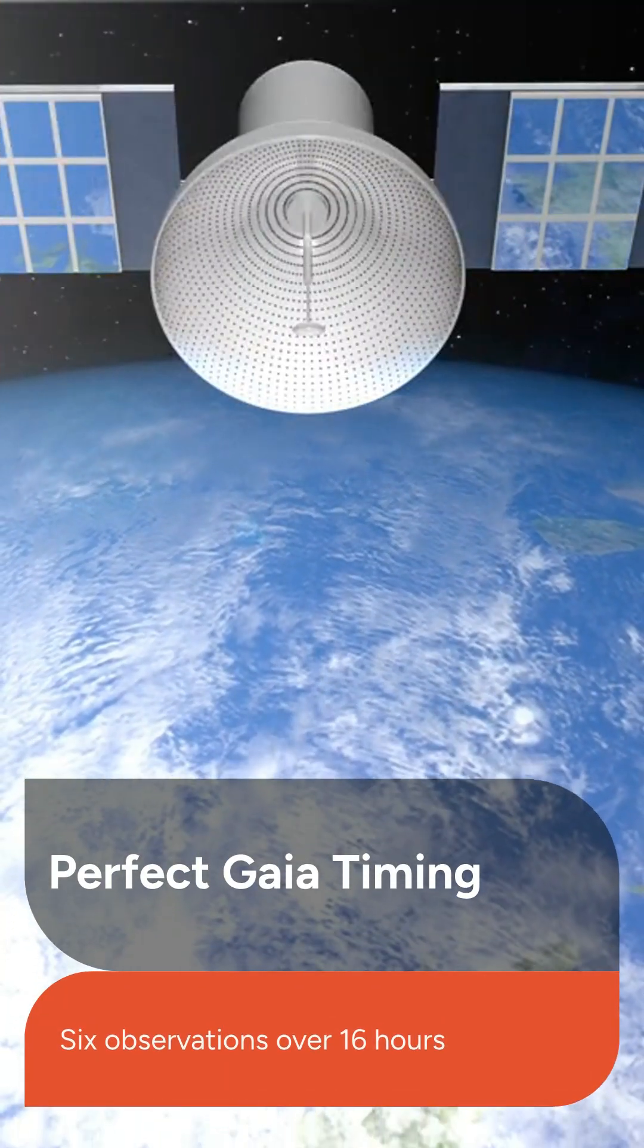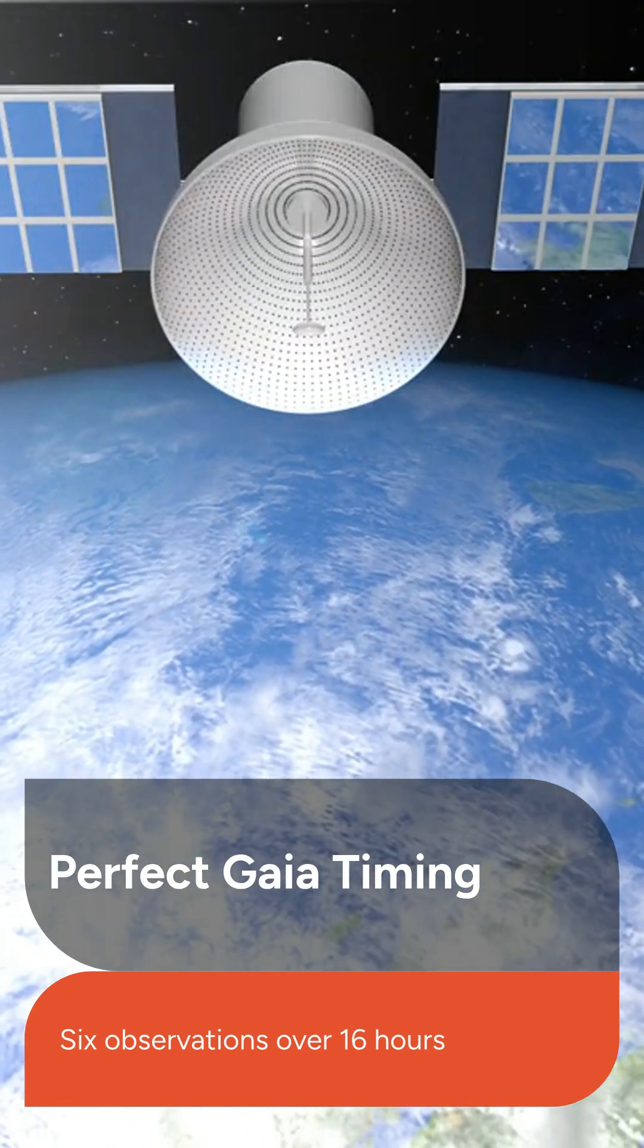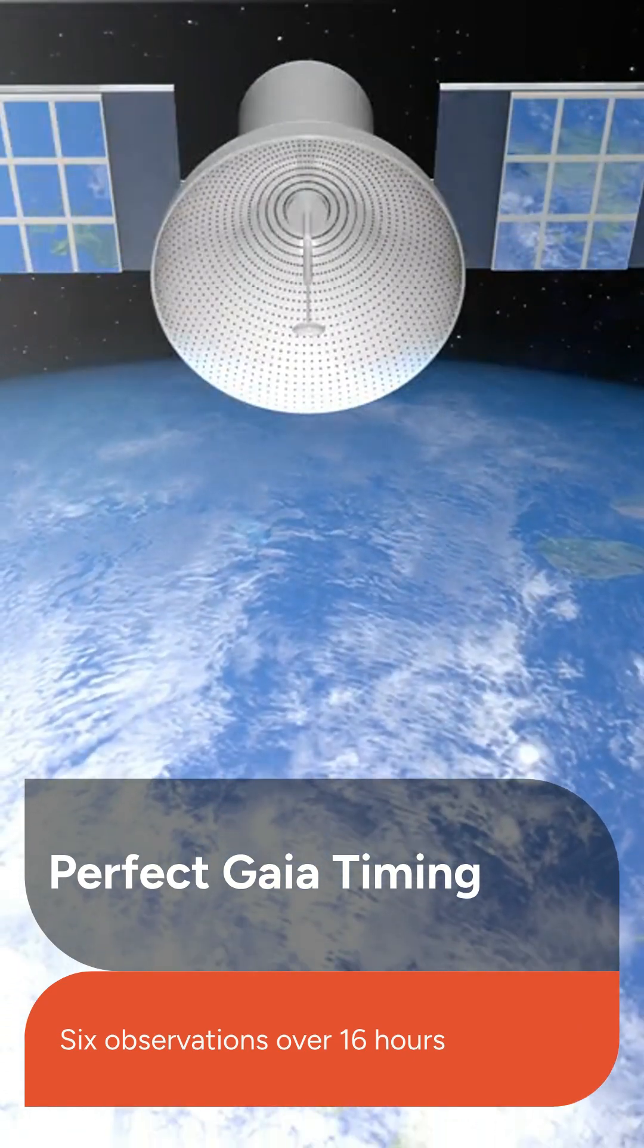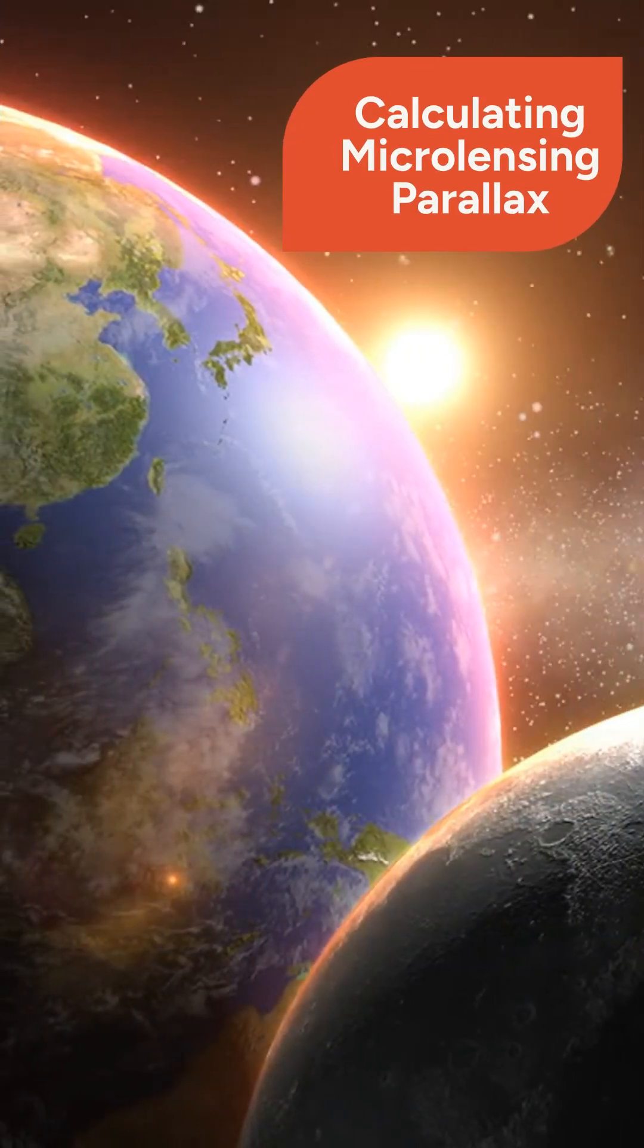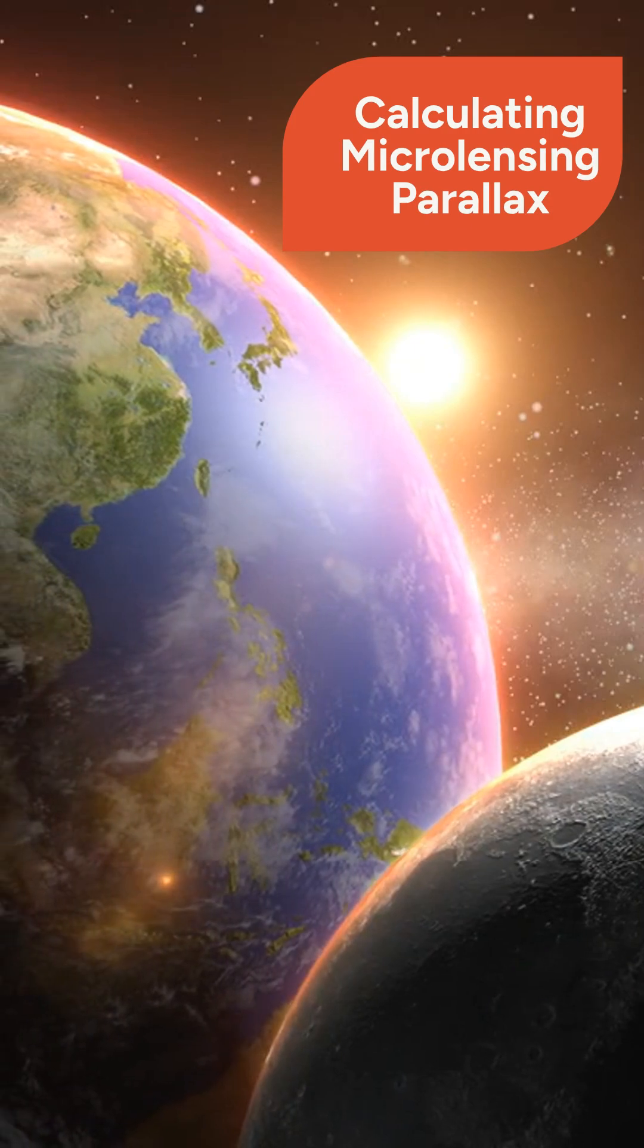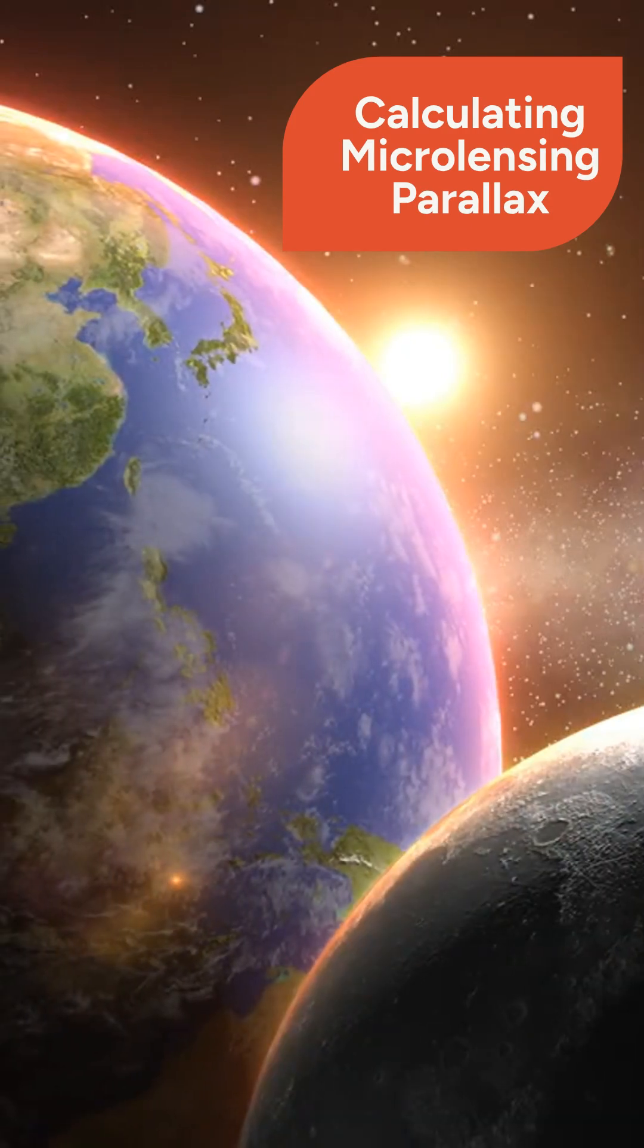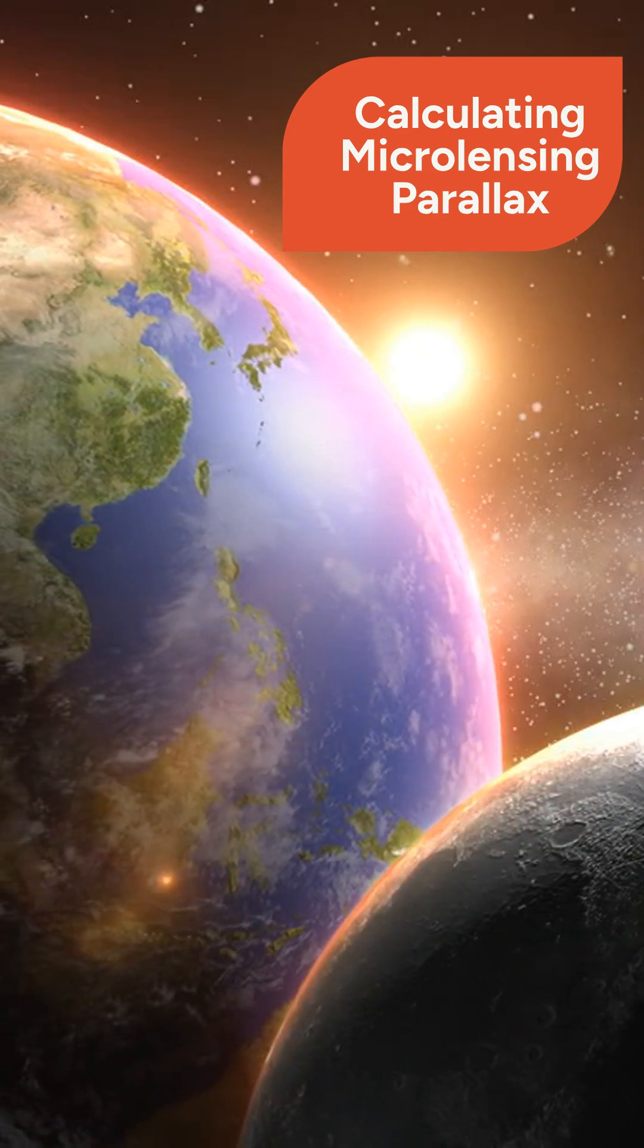Gaia was in a perfect position, observing the event six times over 16 hours, starting near the peak magnification, thanks to a rare geometry. Observations from two different points and a slight timing difference in the light signal allowed the team to calculate the microlensing parallax and determine the planet's distance.